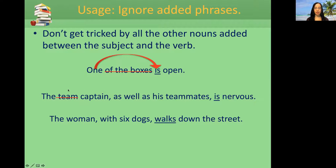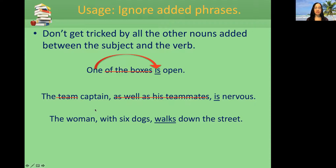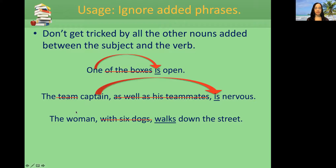The captain — remember, 'team' is the adjective for captain; it's the type of captain. We don't want to get confused with 'teammates.' So what do we say? 'The captain is nervous.' You have to know what the subject noun is. What about the woman example? The subject noun is 'woman.' 'The woman walks down the street.'